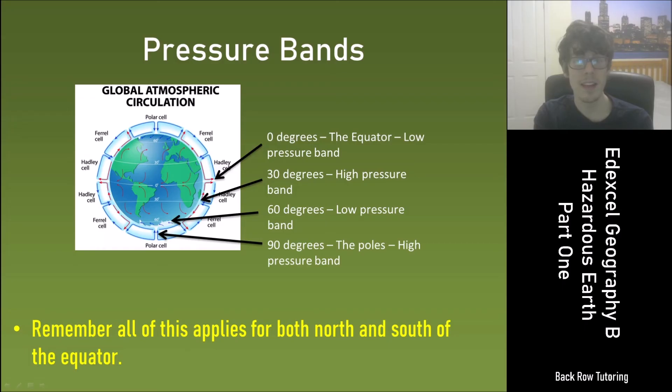Because these cells operate all around the world we get pressure bands. At 0 degrees or the equator we have a low pressure band. At 30 degrees we'll have a high pressure band. At 60 degrees we'll have a low pressure band. And then at 90 degrees or the poles we have another high pressure band. And remember this applies to both the north and to the south.